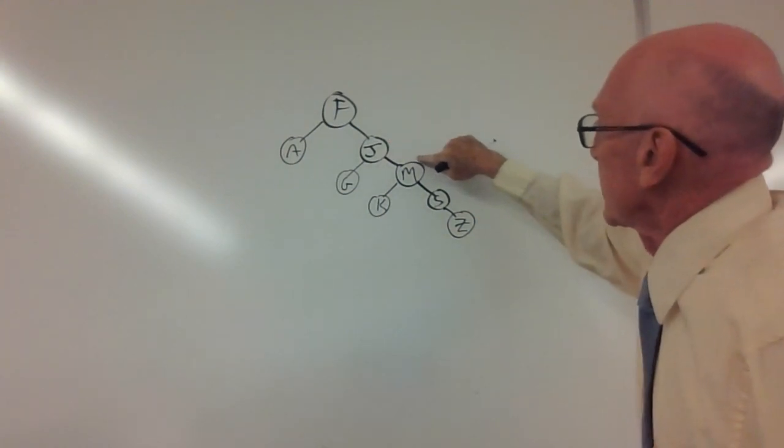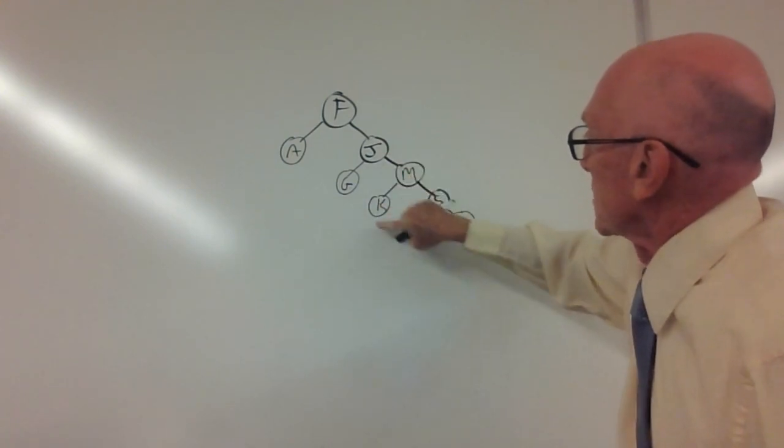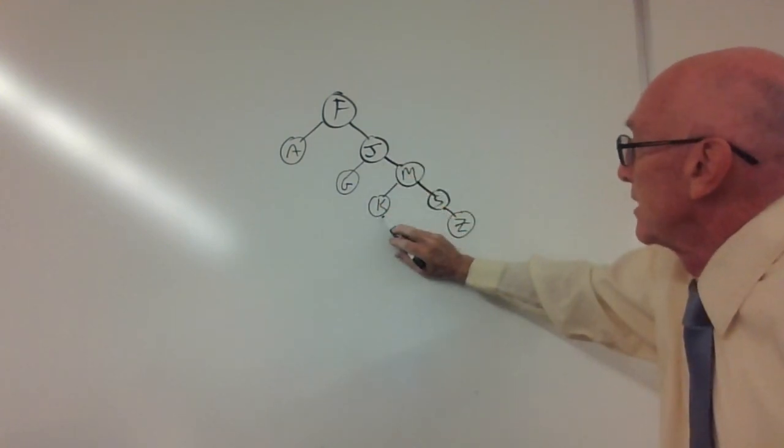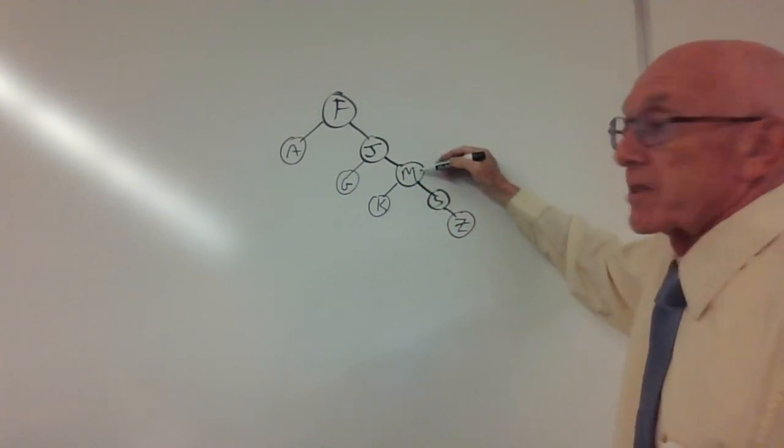Now we can move down to the right, and the smallest thing in J's right subtree is K. K has to move back up to its parent, which is M.